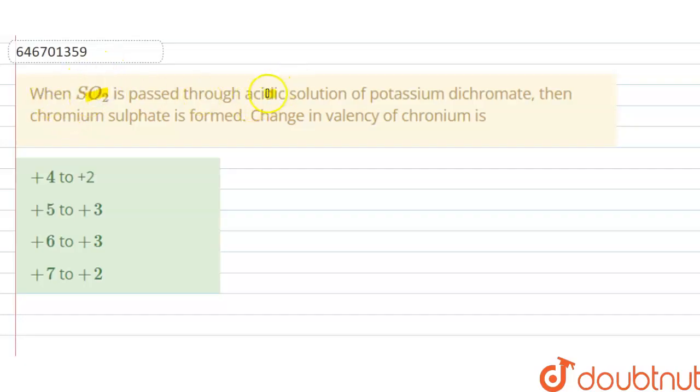When SO2 is passed through the acidic solution of potassium dichromate, then chromium sulfate is formed. Change in valency of chromium is - options a, b, c, d are given here. So we have to choose the correct option.